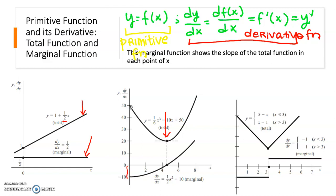The third example shows that the non-smoothness of a total function will result in a gap or discontinuity in the marginal function. This is a sharp contrast to the everywhere-smooth total function in the second example, which gives rise to the concept of a continuous derivative function. For this reason, the smoothness of a primitive function can be linked to the continuity of its derivative. Instead of saying a function is smooth and differentiable everywhere, we may characterize it as a function with a continuous derivative — a continuously differentiable function.